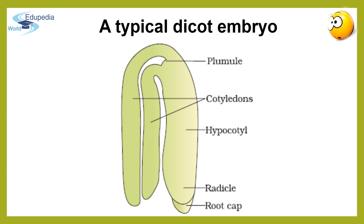Now let's discuss the structure of a typical dicot embryo. A dicot embryo includes an embryonal axis and two cotyledons. The portion of the embryonal axis above the level of cotyledons is the epicotyl, which terminates with the plumule or the stem tip. The cylindrical portion below the level of cotyledons is called the hypocotyl, which terminates at its lower end in the radicle or root tip. The root tip is covered with a protective sheath called the root cap.